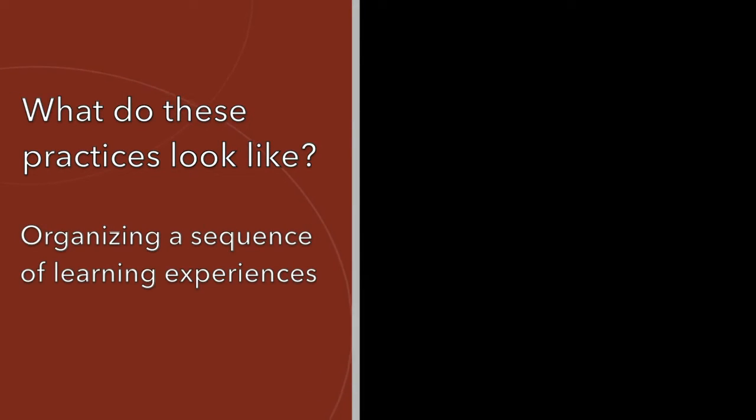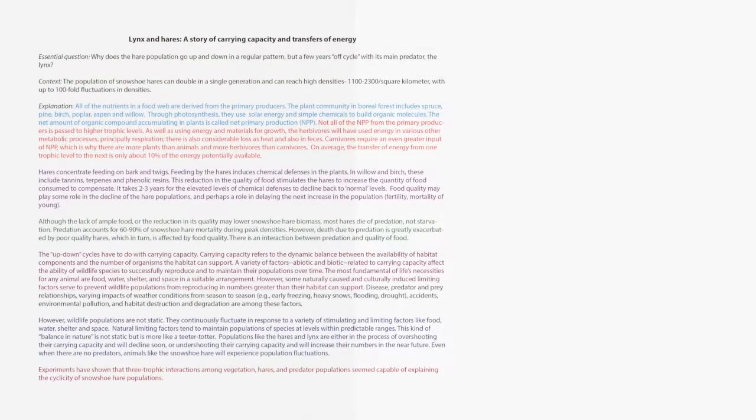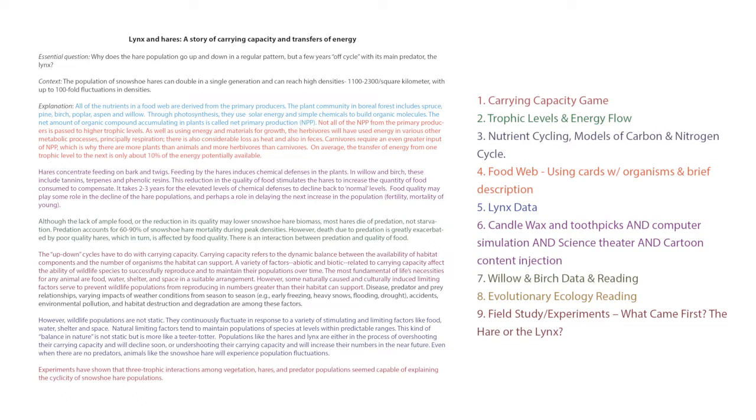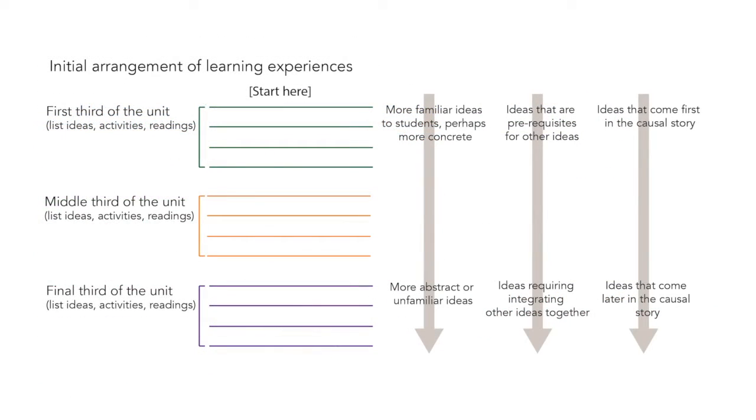In the third planning practice, the teacher takes each science idea in the explanation and uses it to identify at least one activity, reading, or investigation opportunity for students. Many of these would be found in the curriculum; some would have to be developed or transferred from other curricula. The purpose is to make sure that every element of the full gapless explanation is addressed by one or more learning experiences. The next step is to arrange these experiences in an order that would be helpful for students. We think of activities that would fall roughly in the first third of the unit, the middle third, and the final third. This guide shows different ways that you can prioritize what comes early, middle, and later. The three downward arrows are suggested ways to think about ordering.